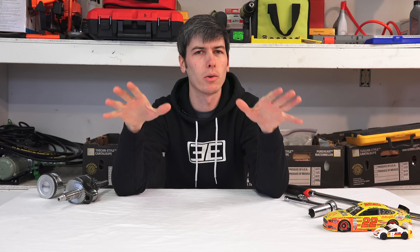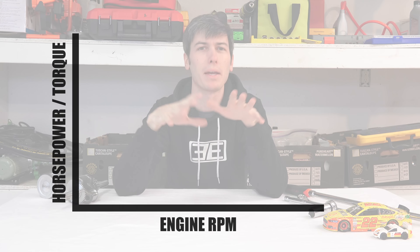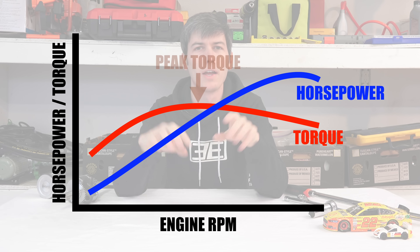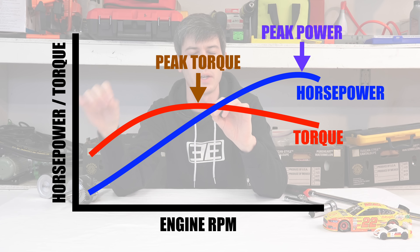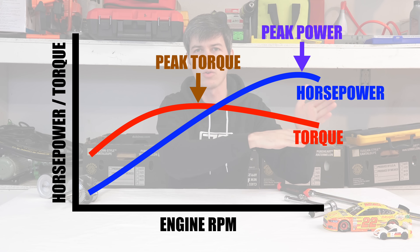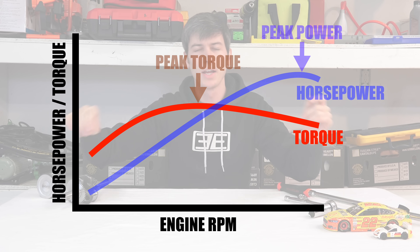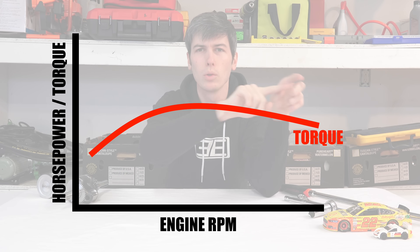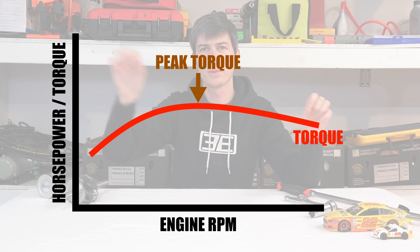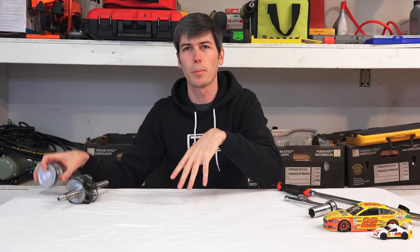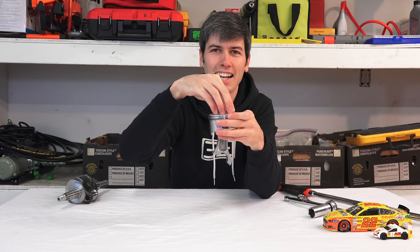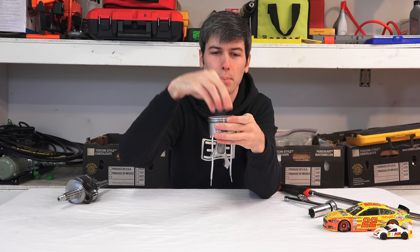Now let's talk about horsepower and torque curves. When a manufacturer gives you a horsepower and torque figure, they're just giving you the peak figure for each — not the amount of torque produced across all engine RPM ranges. If you look at a torque curve, it'll have some peak along that curve with respect to RPM — that's the engine RPM at which the force pressing down on the piston is at its greatest. That's peak torque.